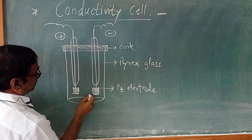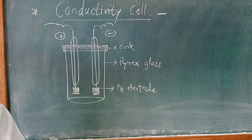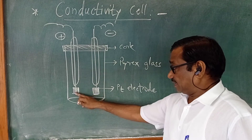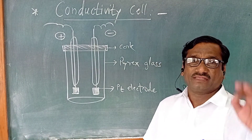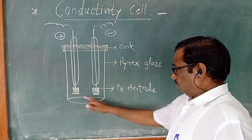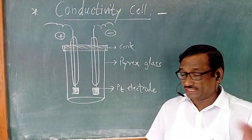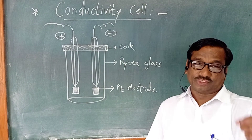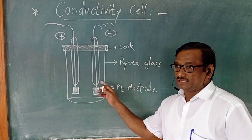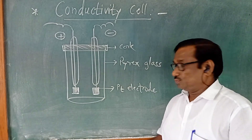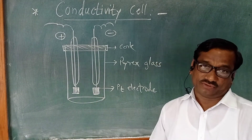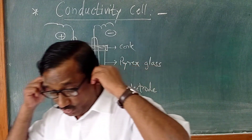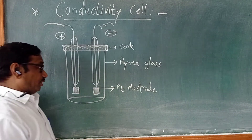The platinum electrodes are at a fixed distance from each other. These are very thin platinum foils which are coated with platinum black. Platinum black is deposited on them electronically to minimize the polarization effect.